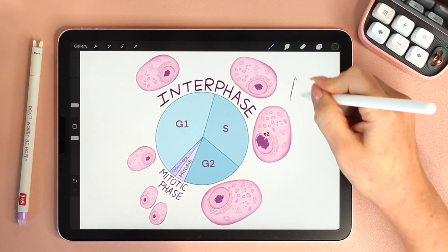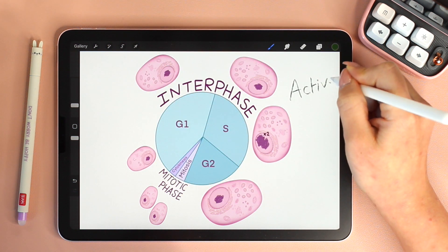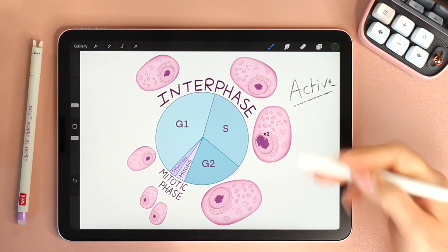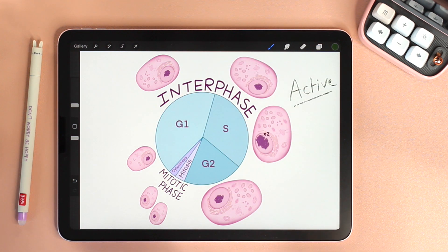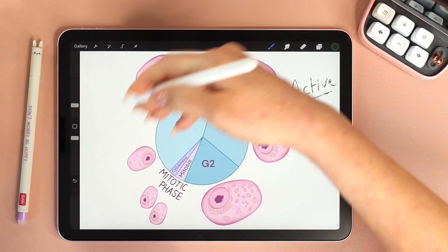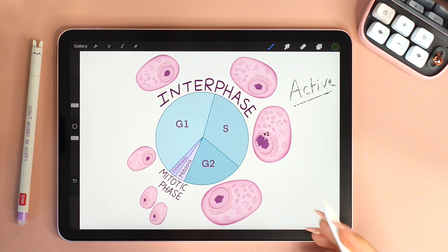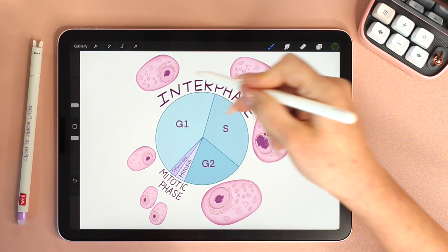The cell is an active entity. It is constantly building molecules, breaking molecules. In one word, it is undergoing metabolic activities. And most importantly, it is growing.